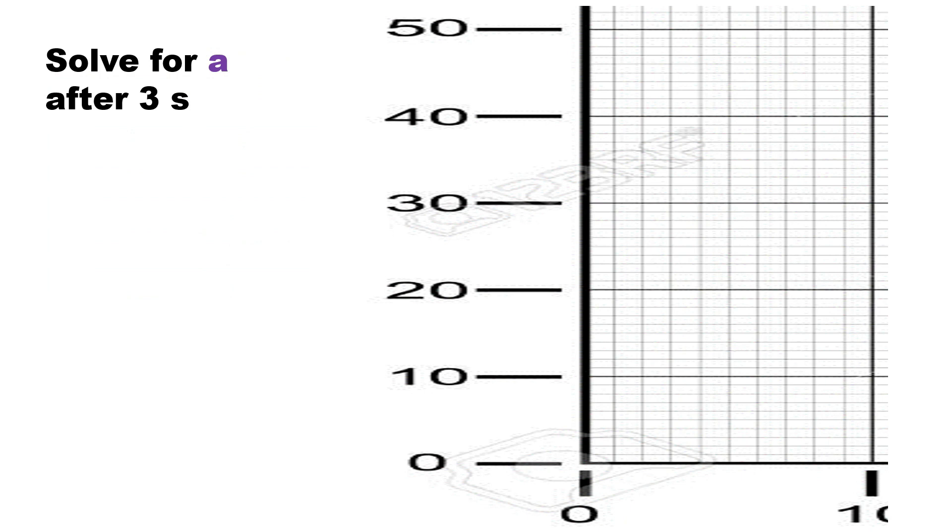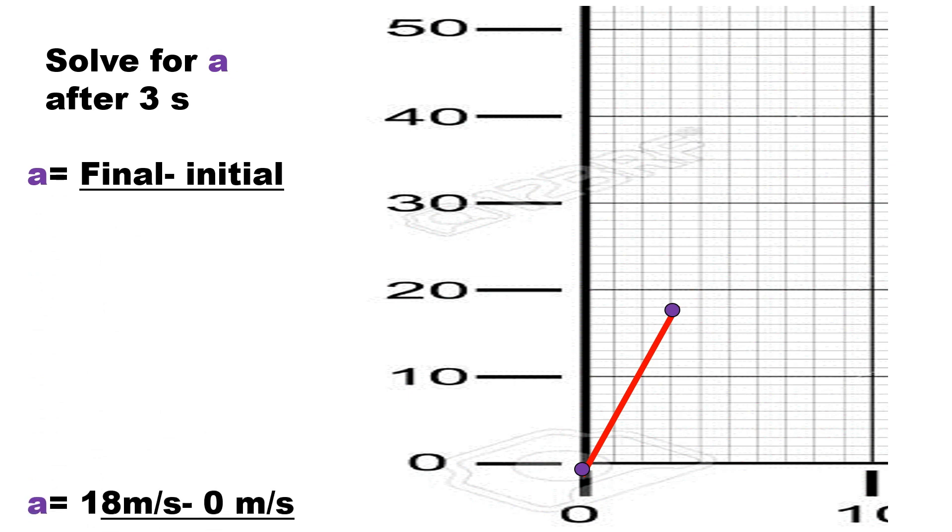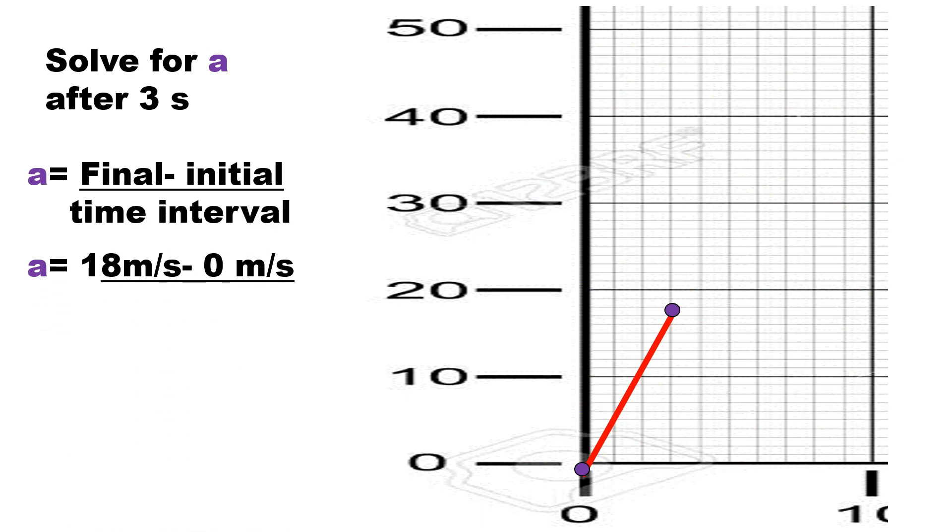Let's have an example and solve for acceleration after 3 seconds. So we consider only points 0 and 3 seconds. Acceleration represents the slope. The rise is between 0 to 18 meters per second. To be precise, with the slope or acceleration, we can consider the rise as a difference between points, final minus initial, the 18 meters per second minus 0, and the run as a time interval which is simply 3 seconds, which gives us an acceleration of 6 meters per second squared.